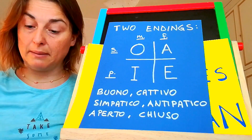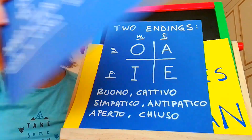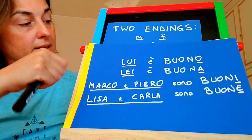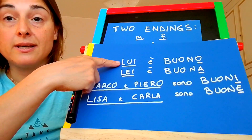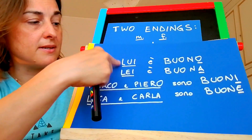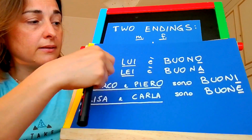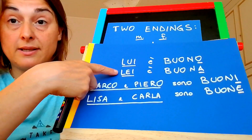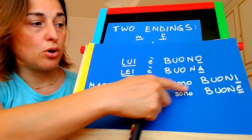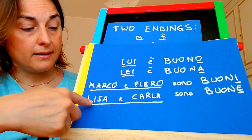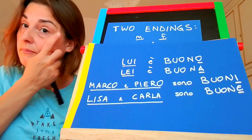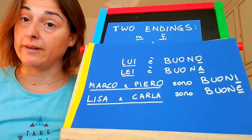To give you an example about the use of these endings in context, you can see these sentences. Lui è buono — he is good — ending O, because he is a man. Lei è buona — ending A, because this is she. Marco e Piero, two men, sono buoni. And Lisa e Carla, two girls, sono buone. So this is our first class of adjectives.